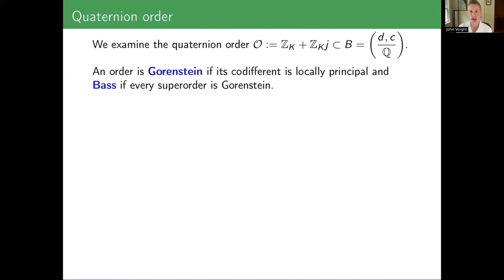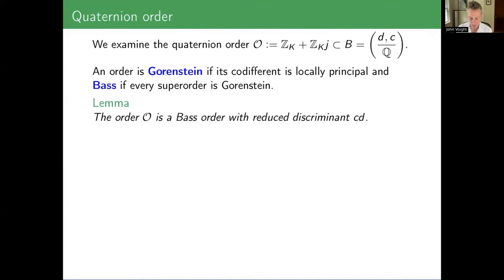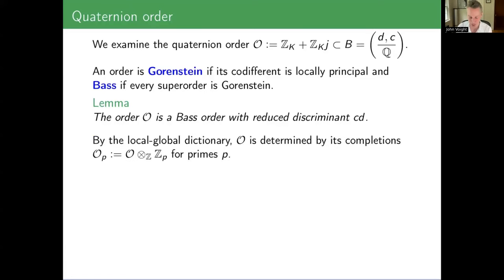The lemma is that the order 𝒪 is a Bass order, and its reduced discriminant is just C times D. It's not hard to prove the lemma once you know these things. I wrote a slender volume that will explain all of this to you — it's freely available and PDF searchable, so you can go right to where you need to. Search for the word 'Bass'.